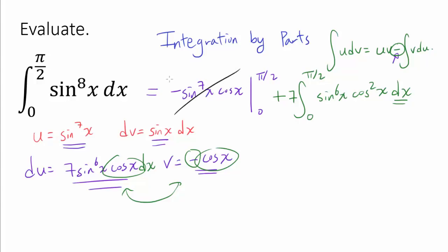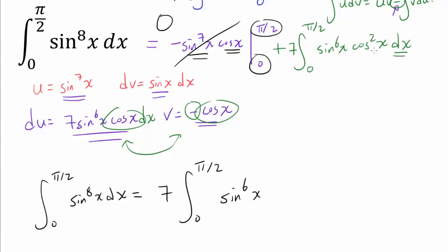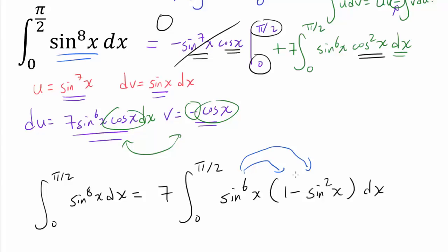The boundary term −sin(x)^7·cos(x) evaluated from 0 to π/2 is zero, because cos(π/2) = 0 and sin(0) = 0. So we have the integral from 0 to π/2 of sin(x)^8 dx equals 7 times the integral from 0 to π/2 of sin(x)^6·cos²(x) dx. We replace cos²(x) with 1 − sin²(x) to retain symmetry in sine.